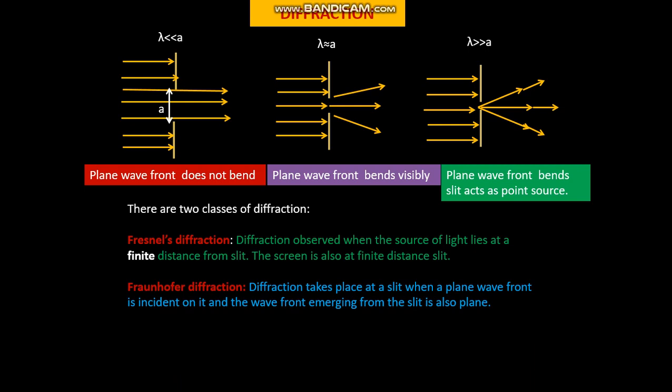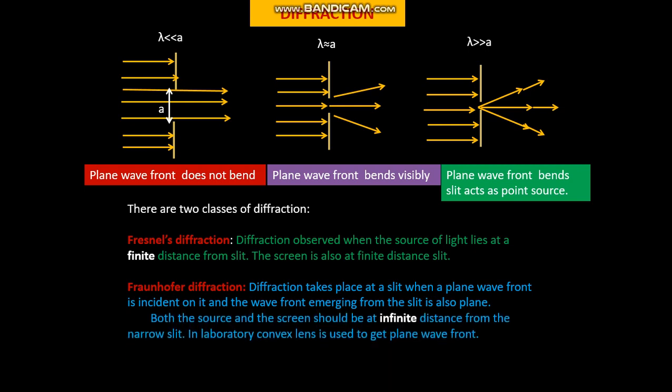Fraunhofer diffraction. Diffraction takes place at a slit when a plane wave front is incident on it and the wavefront emerging from the slit is also plane. So both the source and the screen should be at infinite distance from the narrow slit.